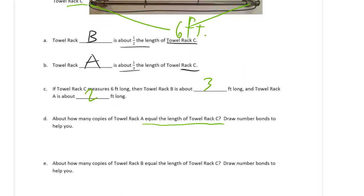So we could do this. We could just say, say it takes three copies of A to make a C. And then we can make a number bond.